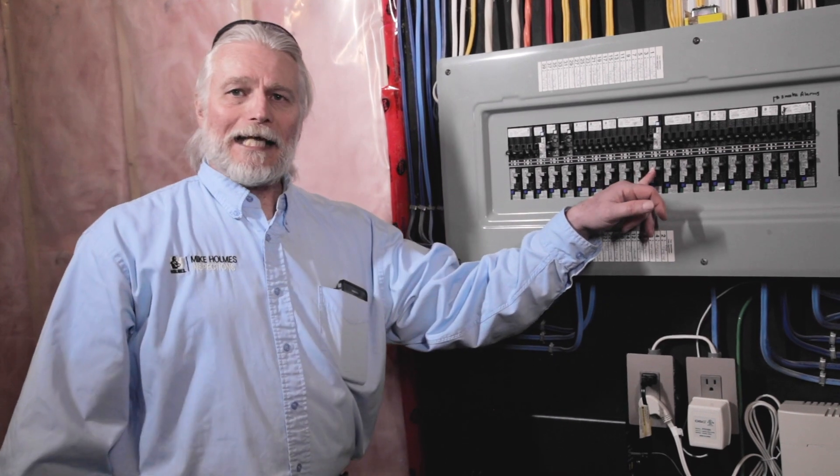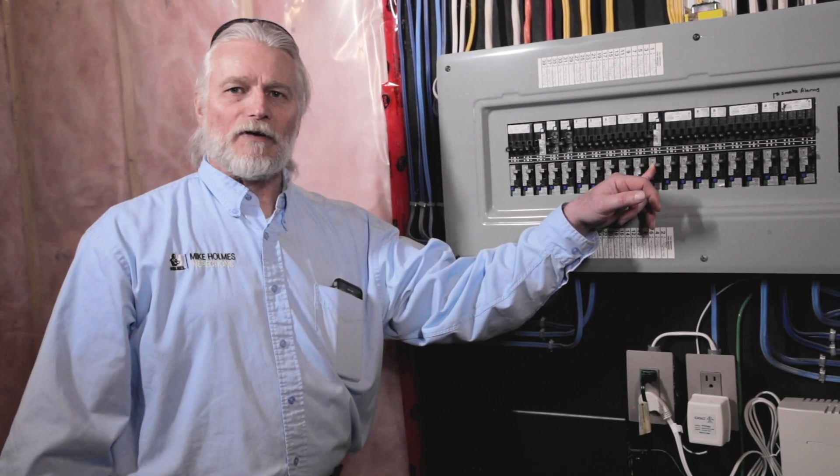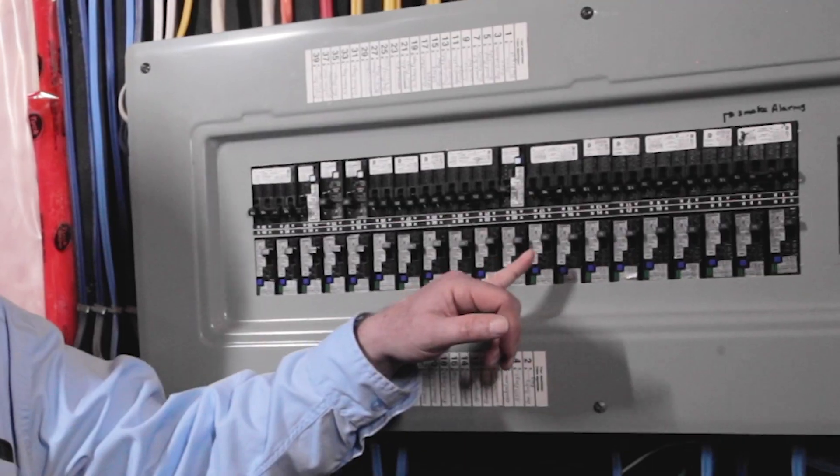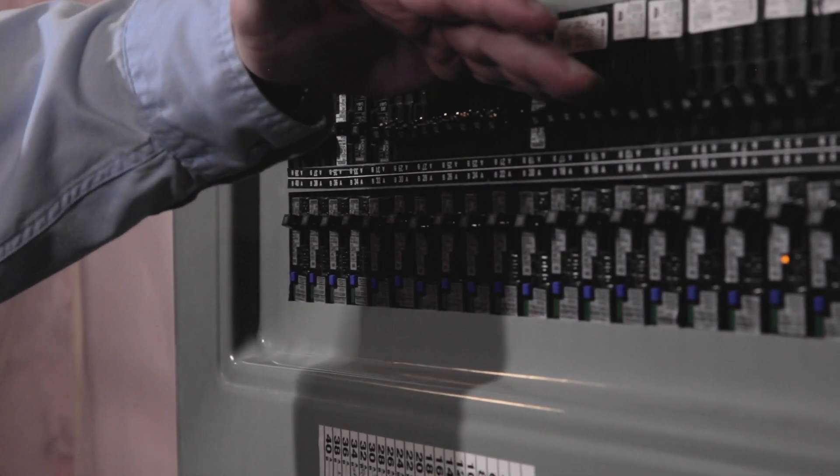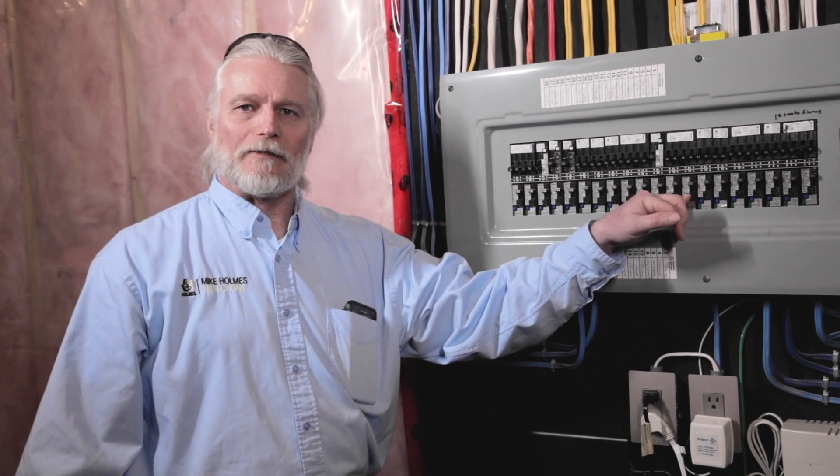If you do see these things tripping again call in the professionals. Let's find out the reason why these arc faults are tripping. They're there to prevent fires so let's just make sure that when they're doing their job that we want to get the cause of that problem fixed.